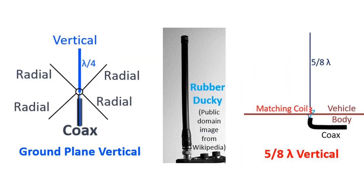Ground plane vertical antennas used for VHF and UHF work are also monopole antennas, usually with quarter wavelength radiating elements and a ground plane formed by three or four radials. Maximum power in the horizontal direction will be achieved by a 5/8 wavelength vertical antenna, which offers the best gain among ground plane monopoles and is useful as a mobile antenna for VHF and UHF. When mounted on an automobile body, the ground plane is formed by the vehicle body.